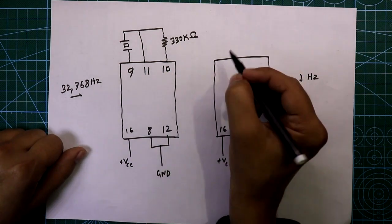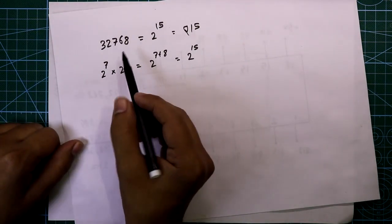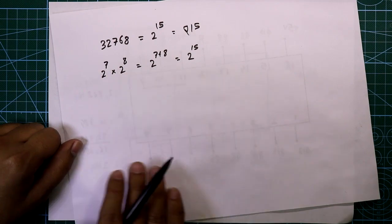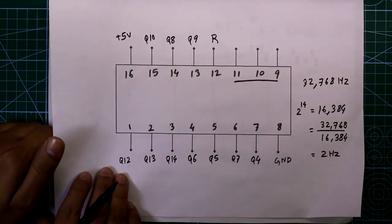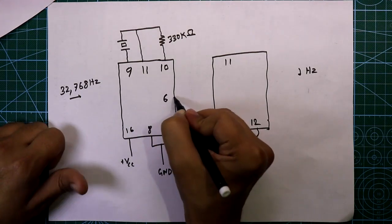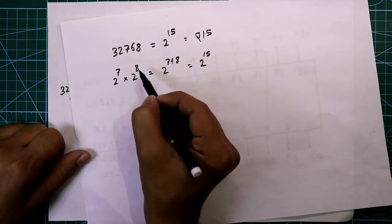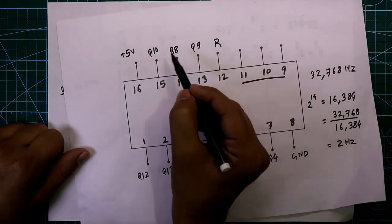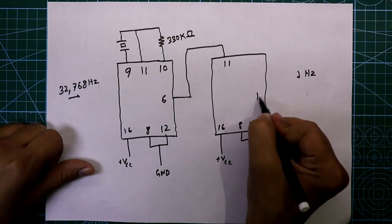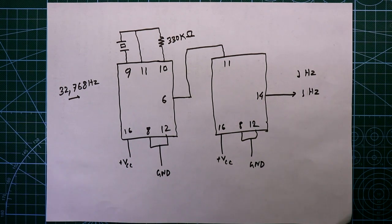First, we divide by Q7, which is 2 to the power 7 at pin 6. Pin 6 of the first IC is connected to pin 11 of the second IC as the clock input. Then our second division is Q8, which is 2 to the power 8 at pin 14. We take the output from pin 14 of the second IC, and it will be equal to 1 Hz.